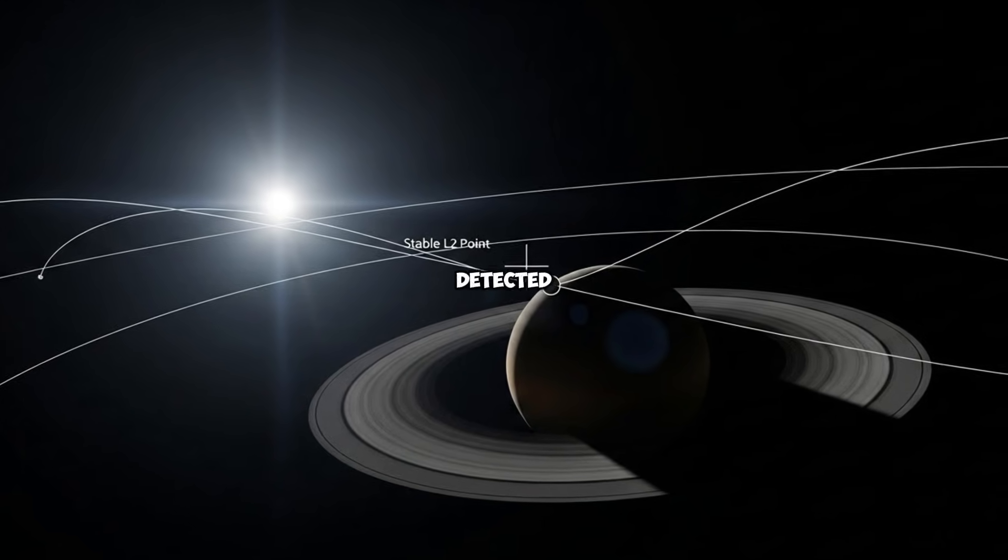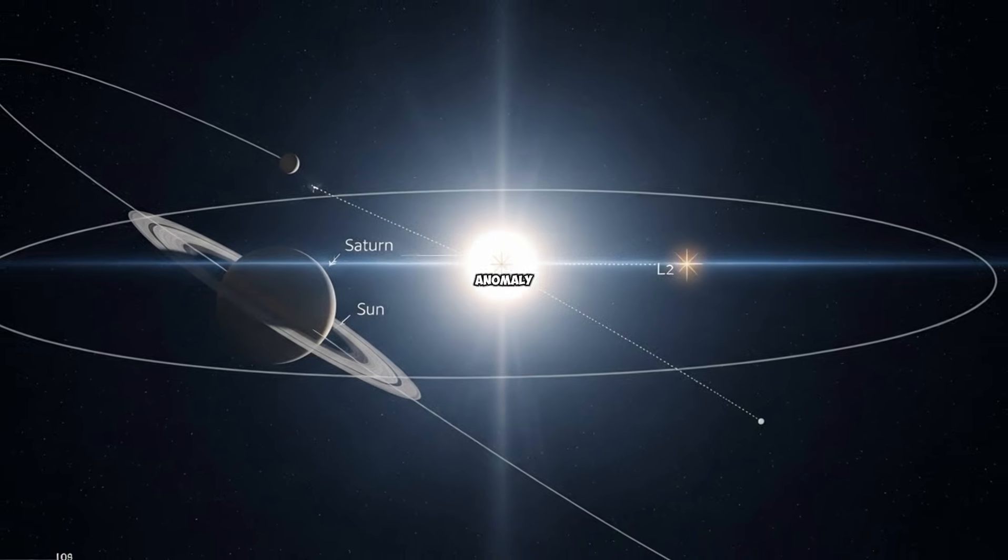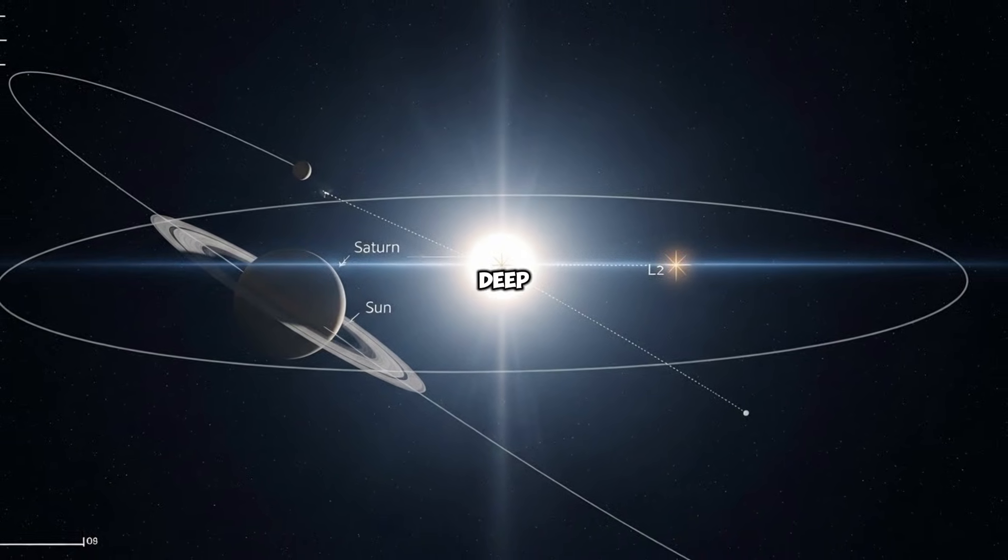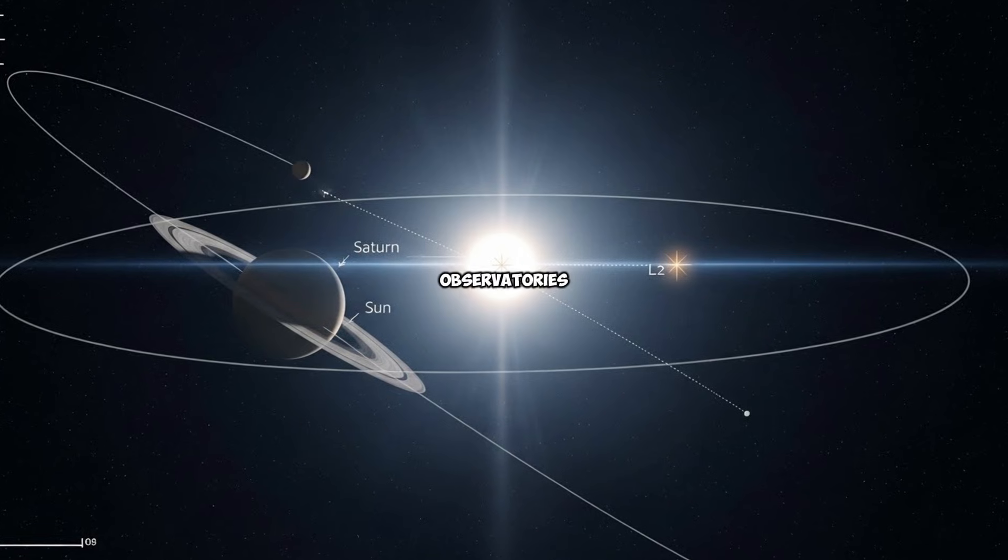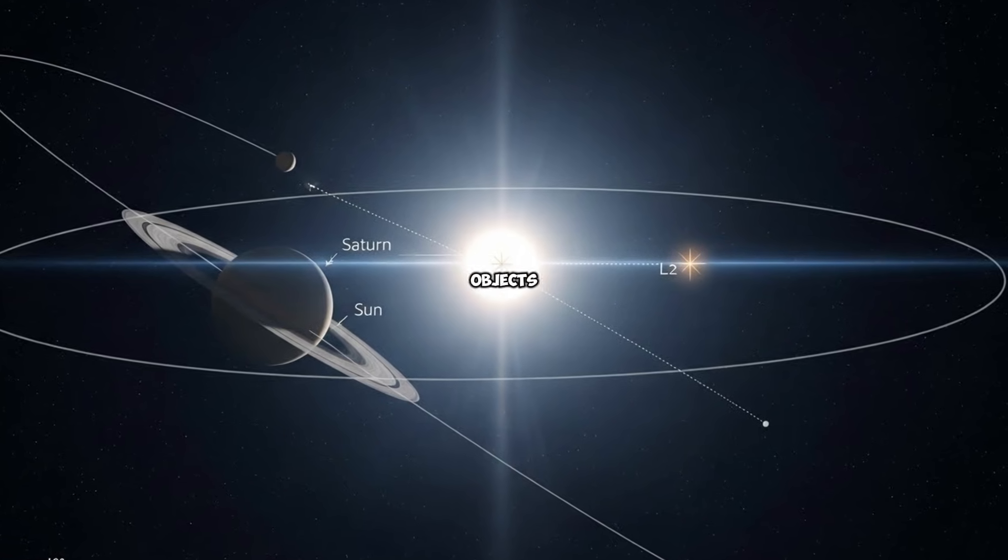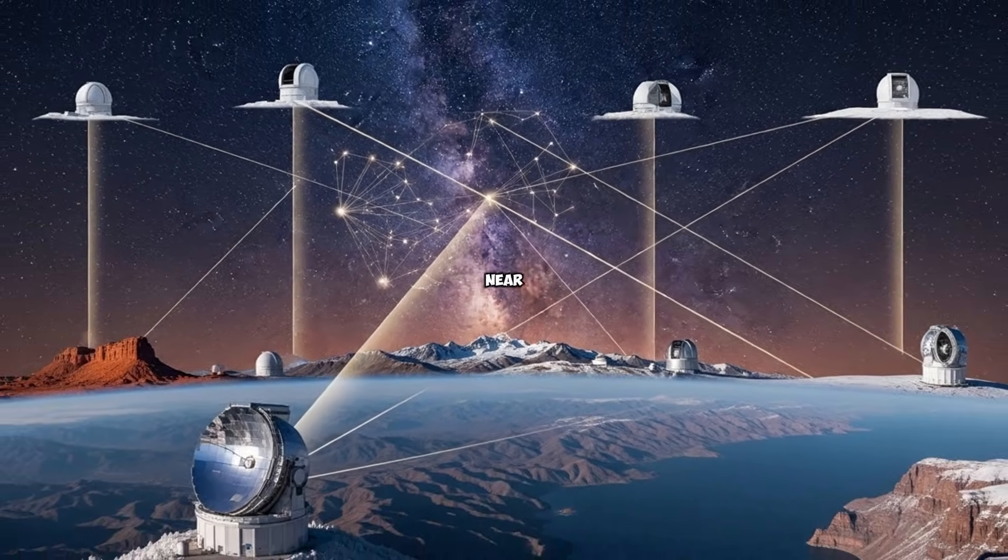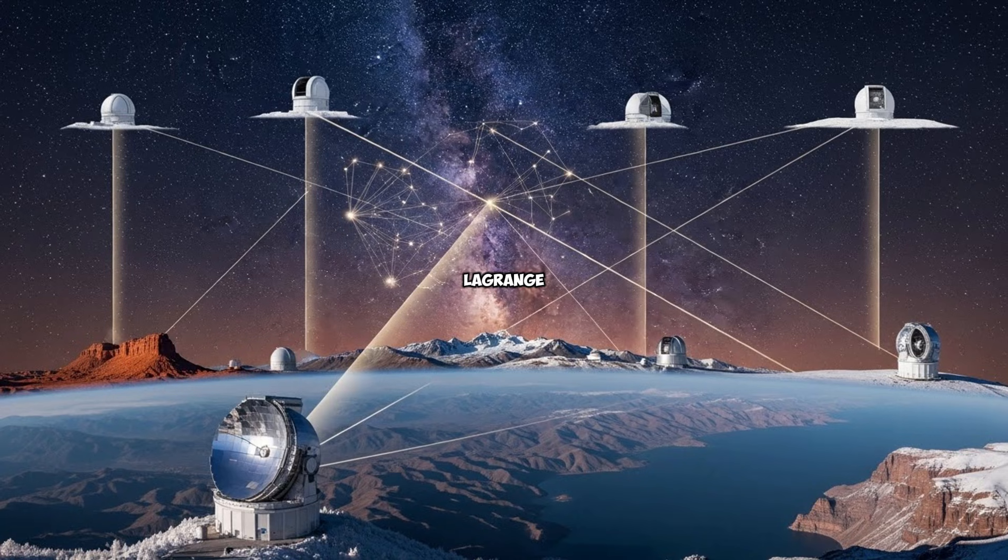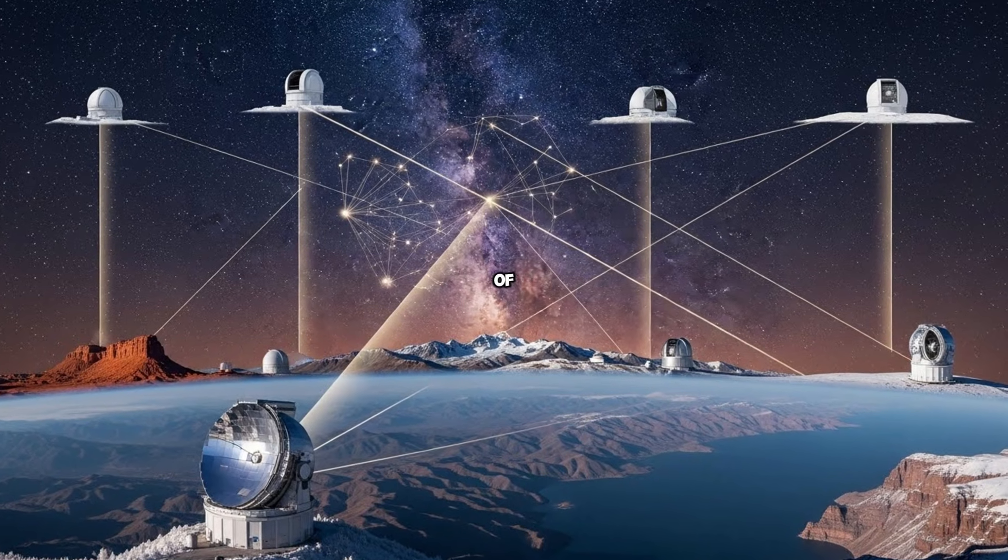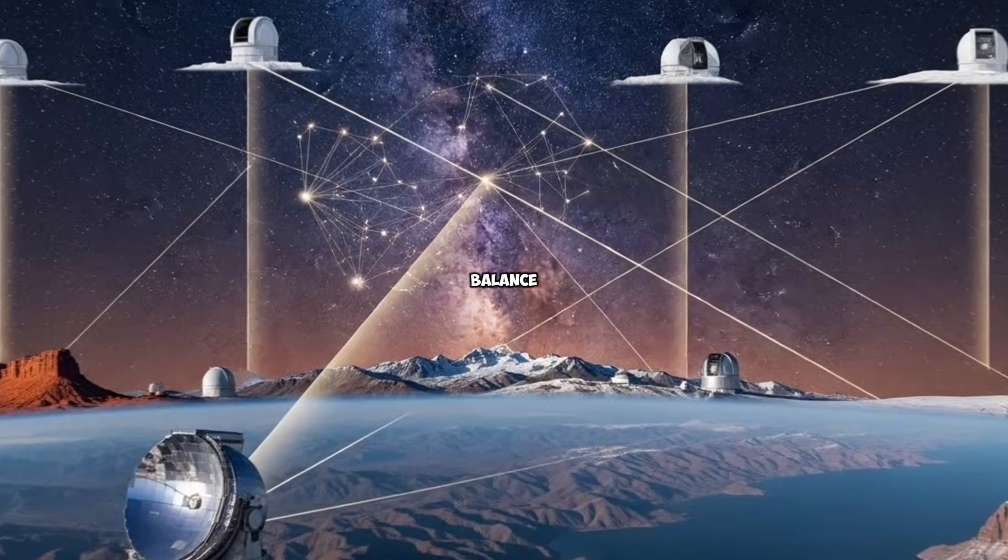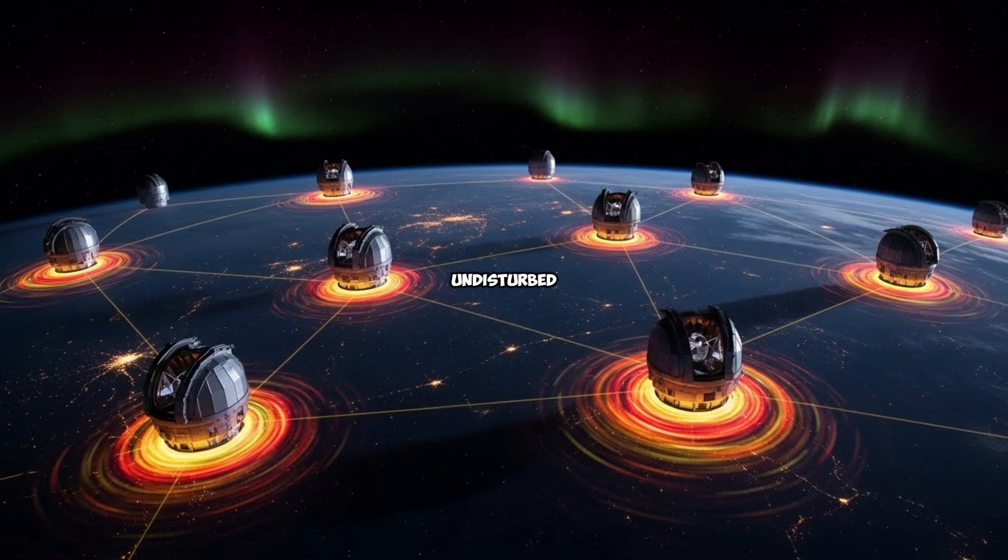The Bugha Sphere was first detected in March of last year, not by a telescope, but by an anomaly. NASA's Deep Space Optical Array, a network of synchronized observatories designed to track faint objects beyond the asteroid belt, flagged an infrared signature near Saturn's L2 Lagrange point. That's a gravitational sweet spot where the pull of Saturn and the Sun balance out, a place where objects can hover in space, undisturbed for centuries.